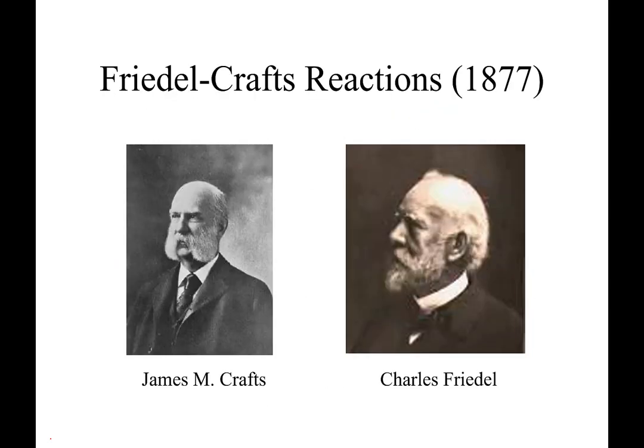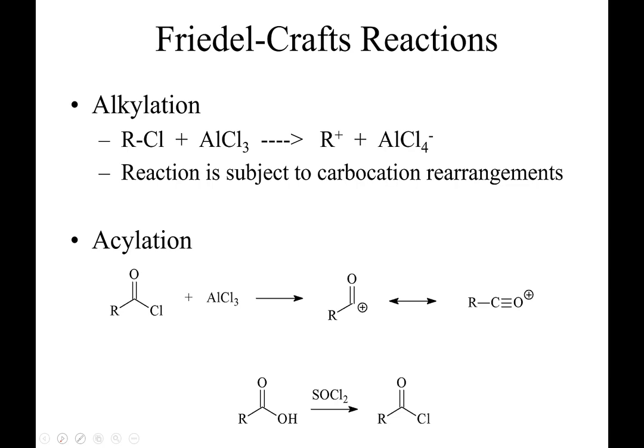What Friedel and Crafts did was use an alkyl halide — they didn't want to wait for the chlorine to fall off, they used aluminum trichloride to make it fall off immediately. The carbon-chlorine bond breaks, the chlorine as Cl- transfers to the aluminum to form AlCl4-, and the carbocation is formed. This is called Friedel-Crafts alkylation — adding an alkyl group to the benzene ring. Any time we add an alkyl group to anything, it's called an alkylation reaction.